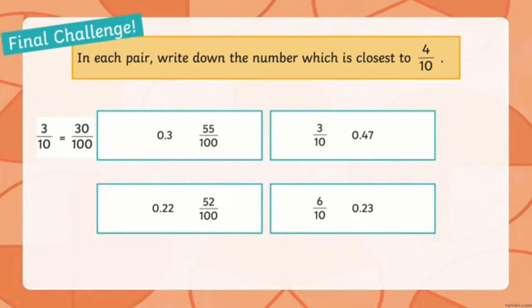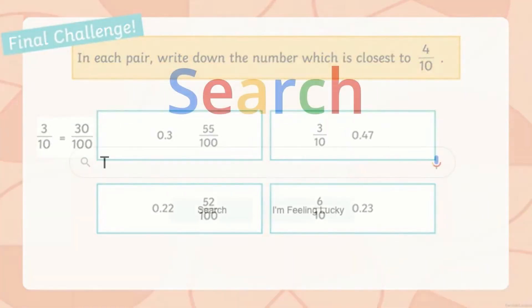We can think that 3 tenths is equivalent to 30 one-hundredths. So we've got 30 one-hundredths and 55 one-hundredths — which one is closer to 40 one-hundredths, or four tenths?